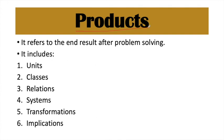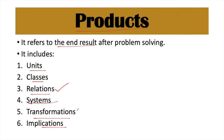The third parameter is products. Products means the result that comes from the actions performed based on the content received. Products determine a child's intelligence level. Under products come units, classes, relations, systems, transformations, and implications. For example, what relationship a child identifies between elements, what transformation occurs in their knowledge after using existing knowledge to solve a new problem, and how they implement new ideas — all of this comes under products.